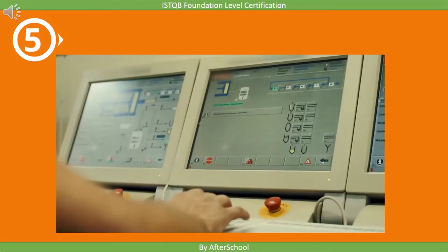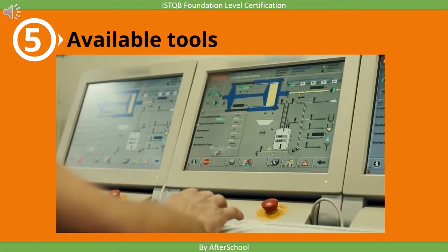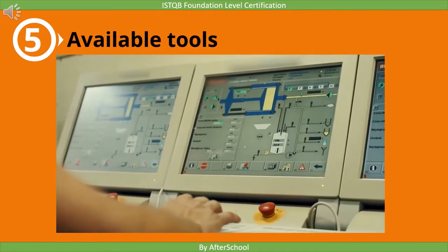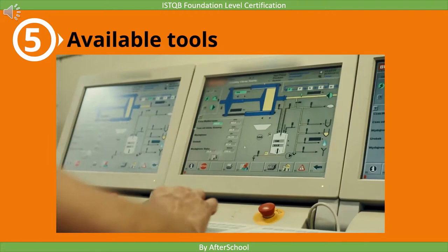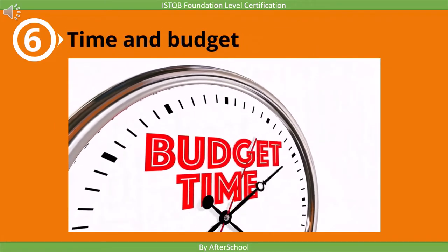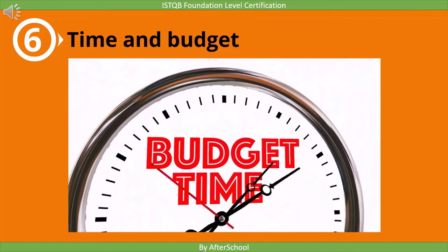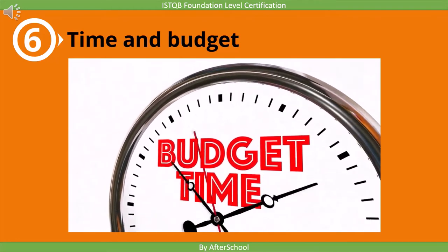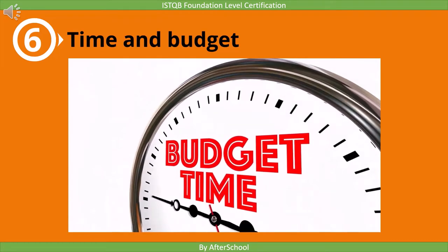The fifth factor is available tools. Different organizations use different tools for testing, and each tool has its own specific features. So you have to use your knowledge and skill to see which test technique you can use so that the available tool can be used efficiently. The sixth factor is time and budget. We have to select the test technique keeping in mind that we can complete the project in time and within the available budget. We also have to see that the selected test technique is in line with the software development model we use.